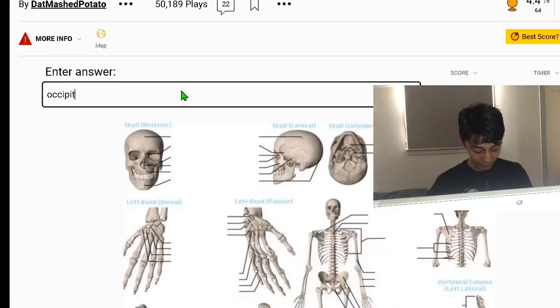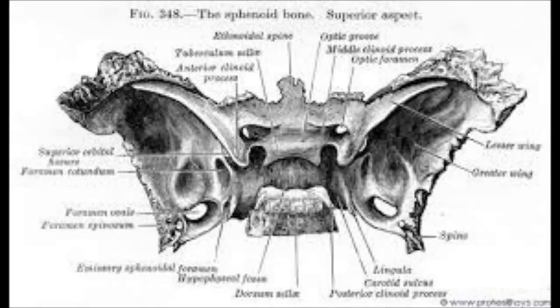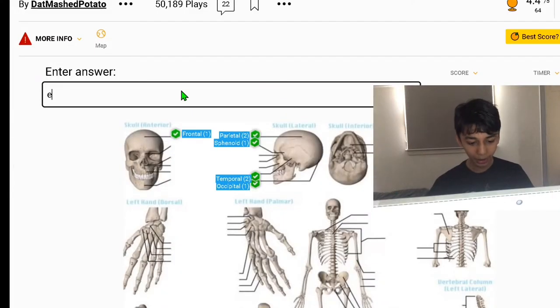Starting out with the occipital, the parietal, temporal which houses your hearing organs, frontal bone, sphenoid which has no tunnels, ethmoid.